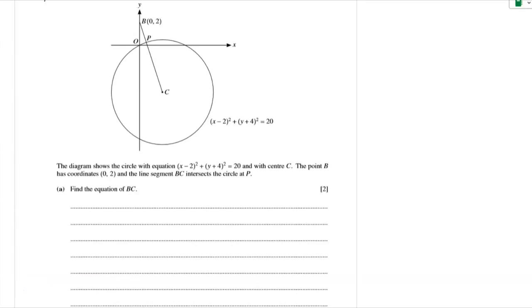For part A, we need to find the equation of the line BC. We actually know the point B, they tell us is 0, 2. And C, we kind of know. It's the center of the circle.